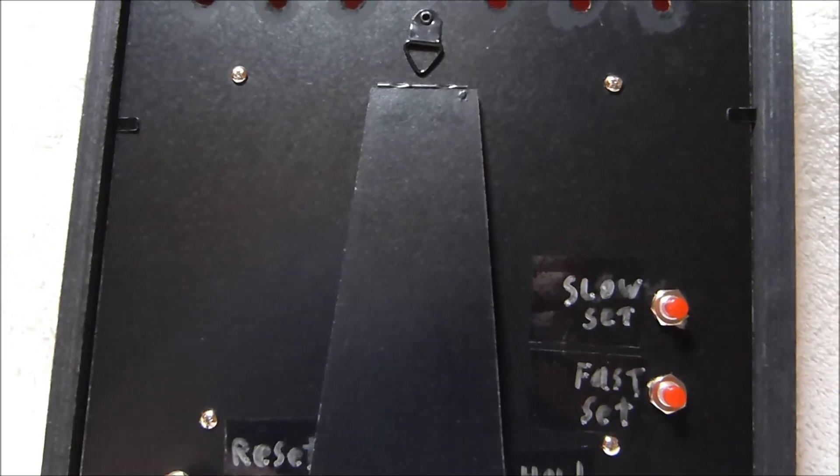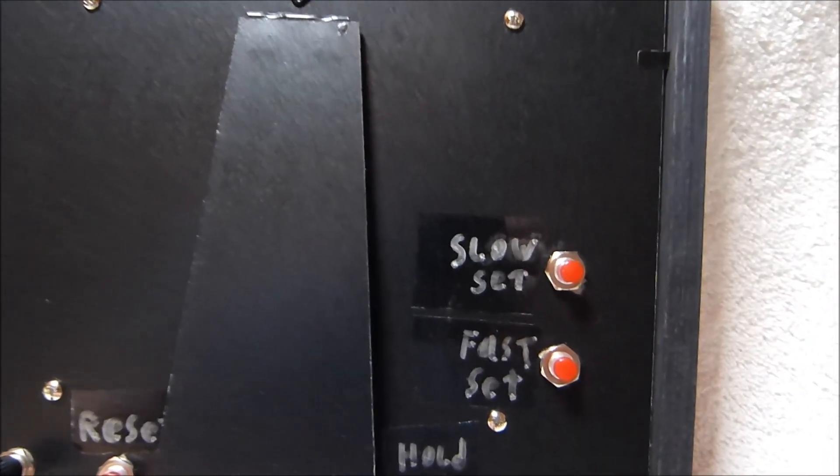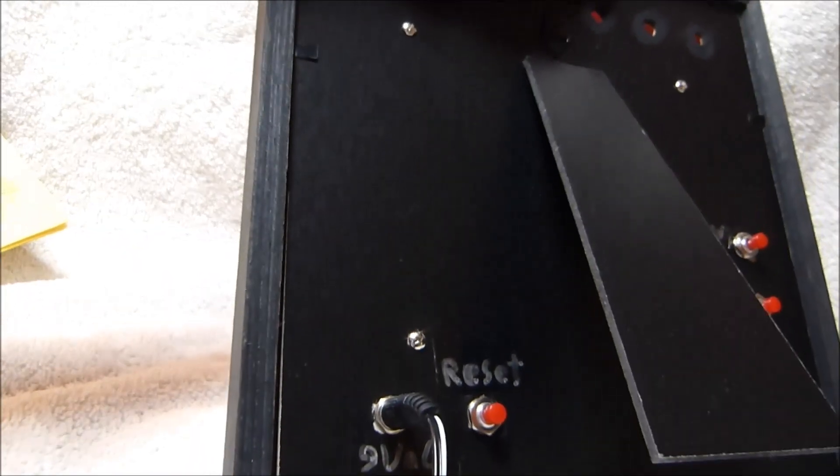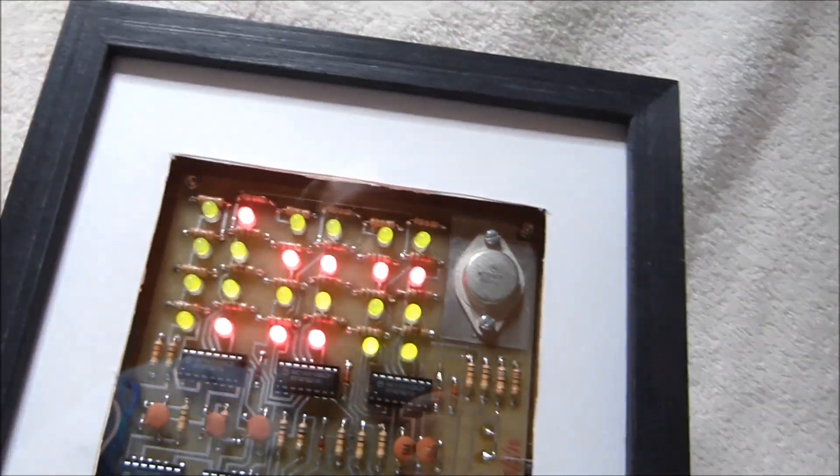The reset here, which will zero out all the counters, a hold switch, which will stop the seconds from incrementing, and then a fast set and a slow set. And it runs off of 9 volts AC nominal, but this transformer puts out more than that. It puts out more like 10 to 11 volts.